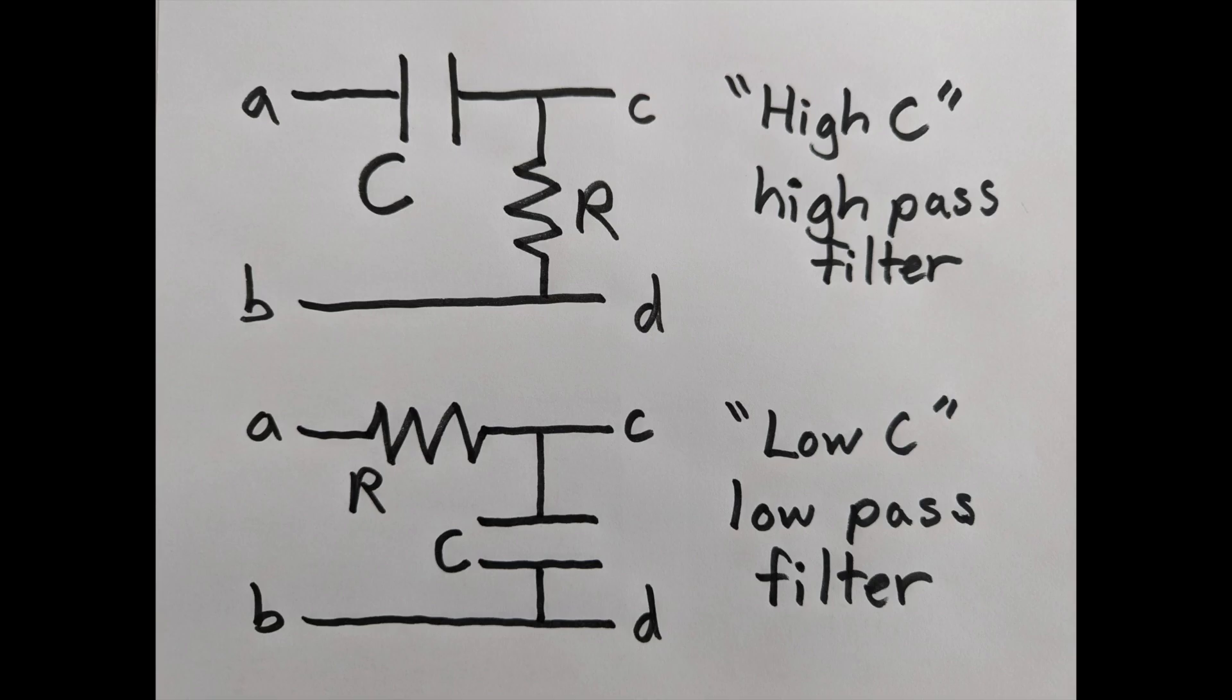For the low C filter, low frequency means the capacitor is a gap. No current flows through R, so there's no voltage drop there, so voltage A equals voltage C, and the signal gets through. But at high frequencies, the capacitor is a wire. You've shorted out your output, so no signal gets through. That's what makes it a low-pass filter.